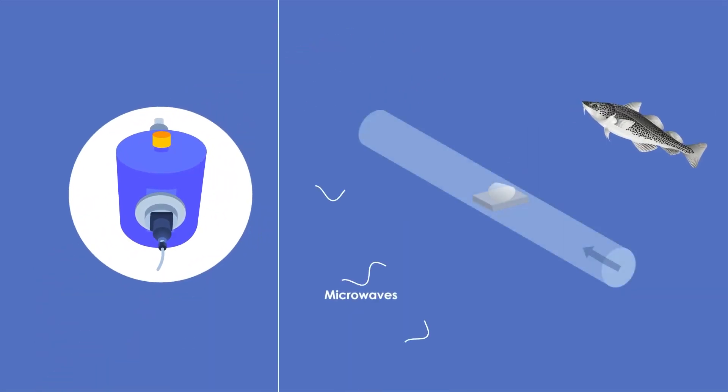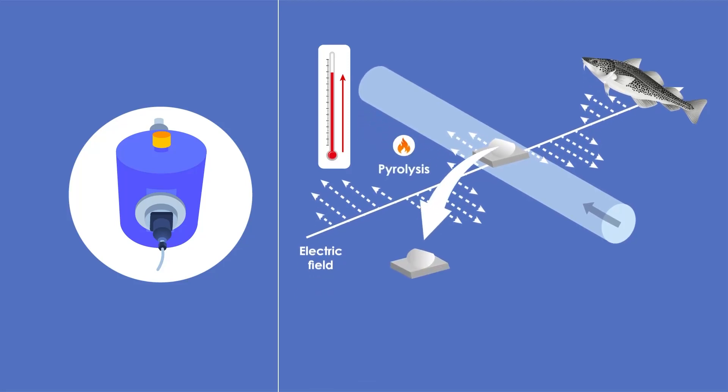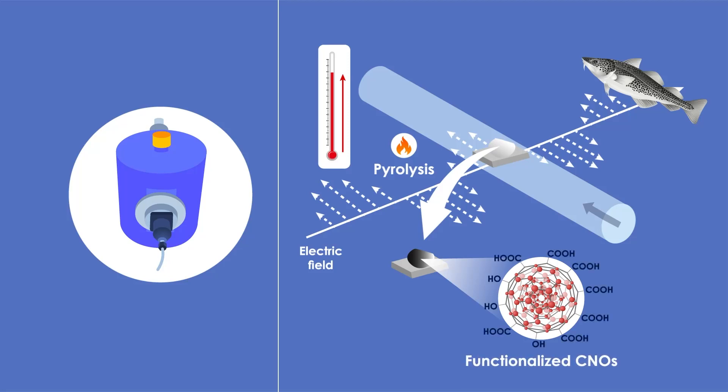The team harnessed the microwave absorption ability of fish collagen to rapidly increase the temperature in the local electric field of the microwave. This initiated the pyrolysis process for obtaining the CNOs while simultaneously functionalizing them, a procedure that was up till now done separately after CNO synthesis.